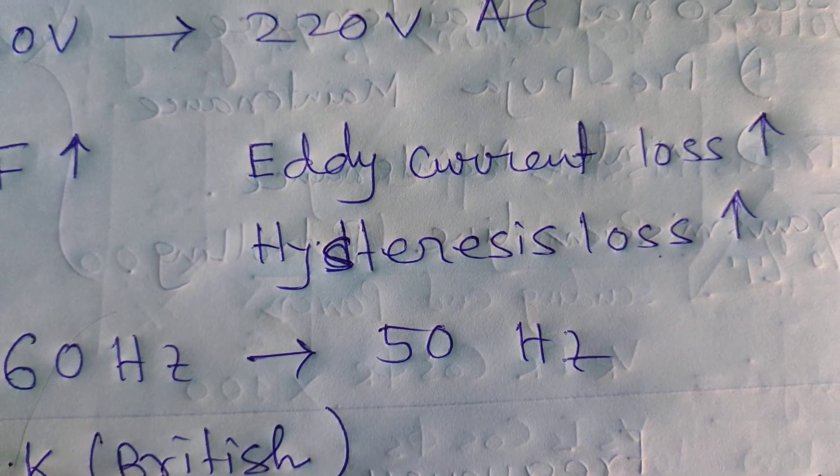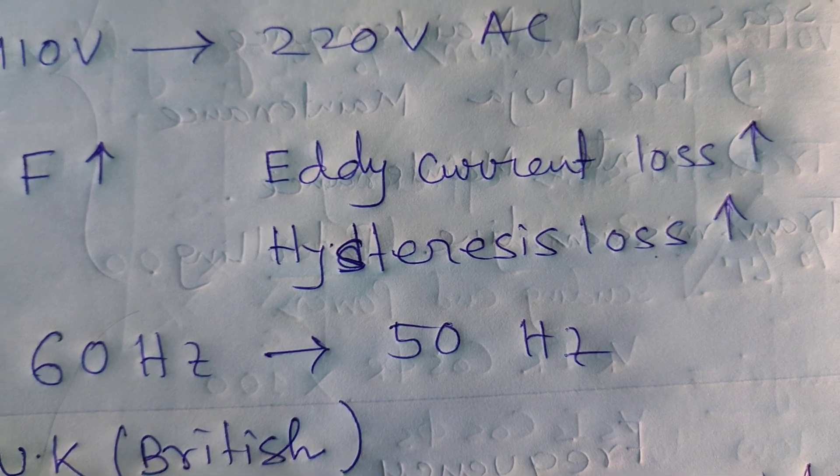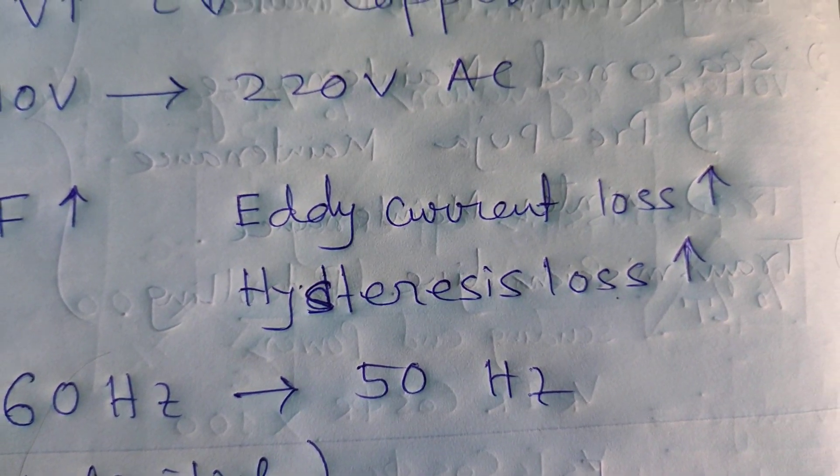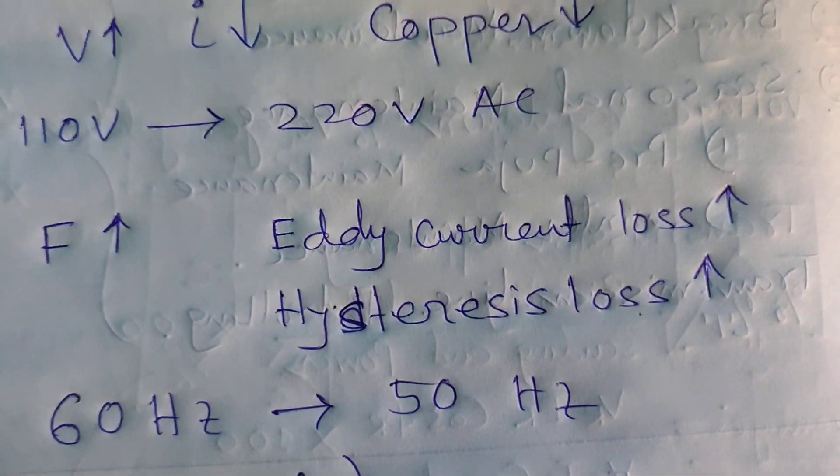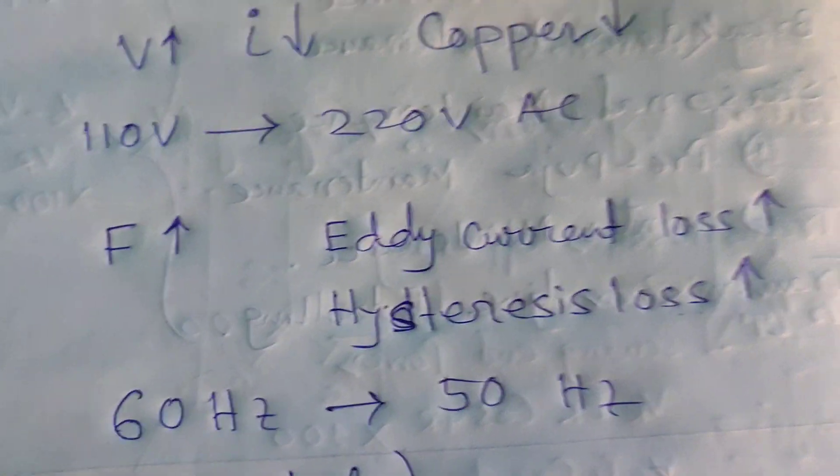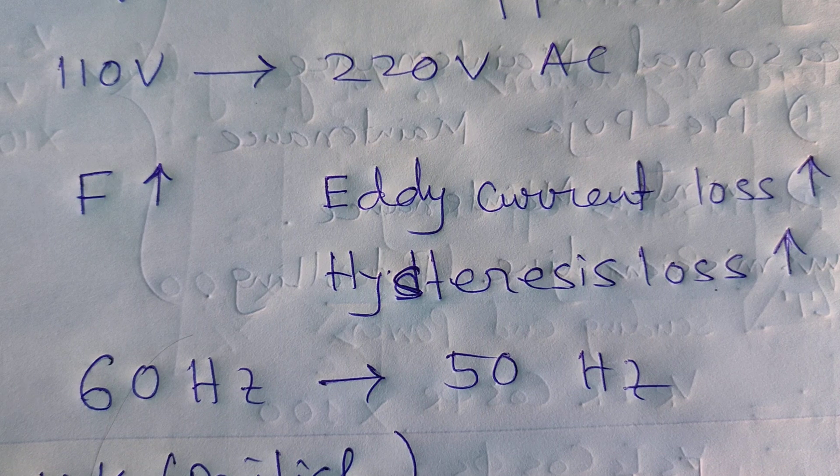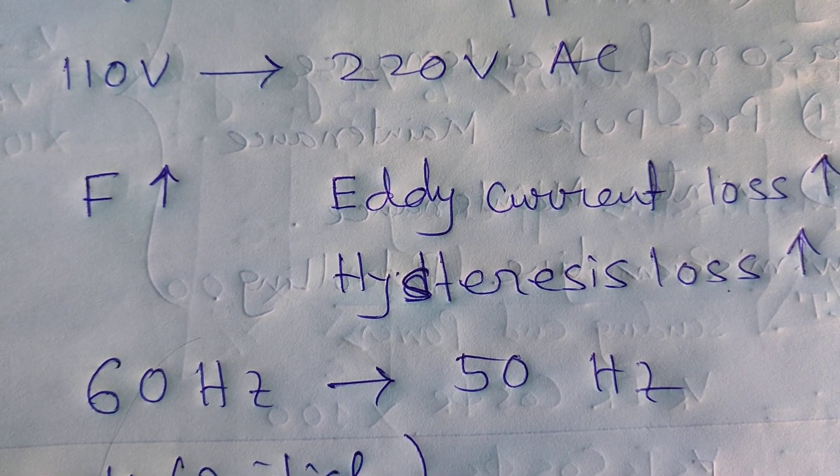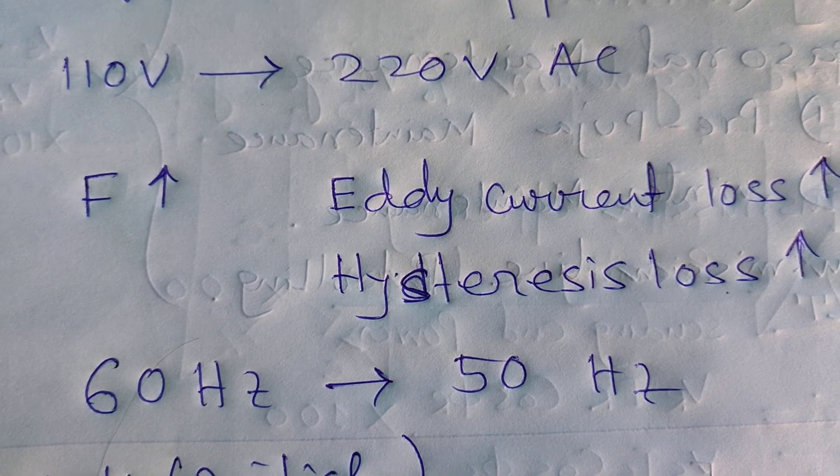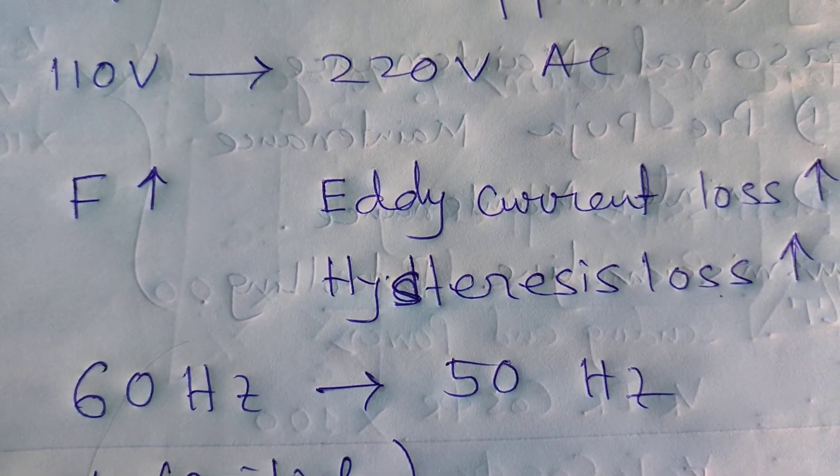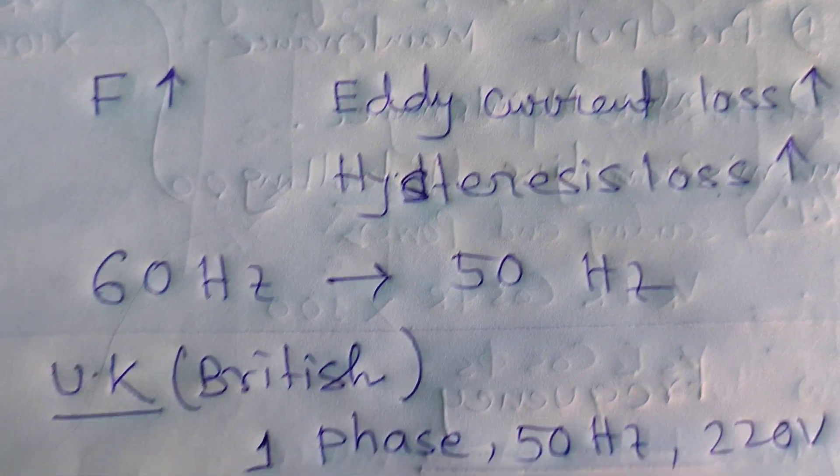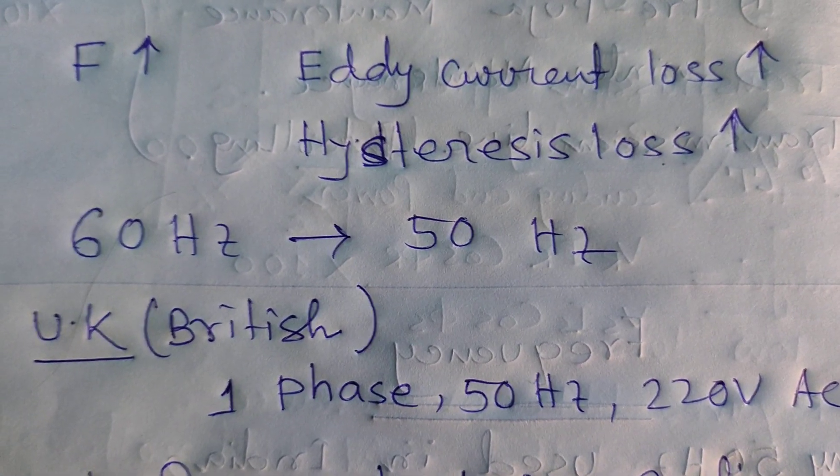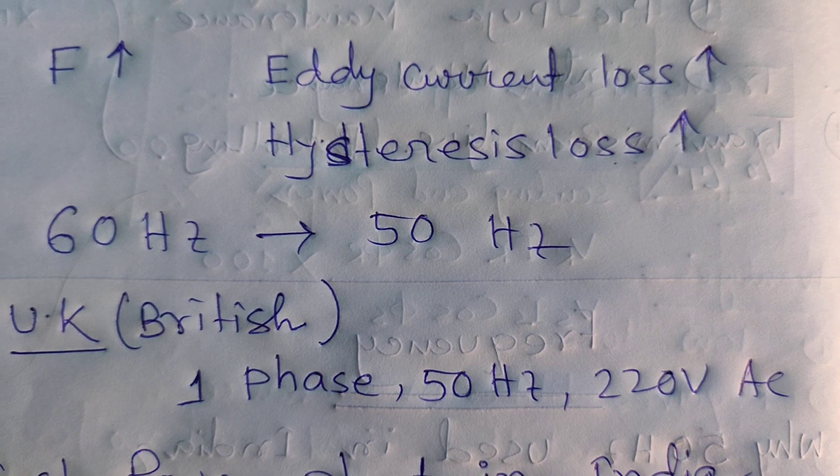The UK government or UK scientists decided that if we decrease the frequency from 60 Hertz to 50 Hertz, then our losses in transformers, eddy current loss, and hysteresis loss will decrease. Then our apparatus will be lifelong and properly used. After decreasing the frequency, they started or recommended using single-phase 50 Hertz, 220 volt AC system in their country.